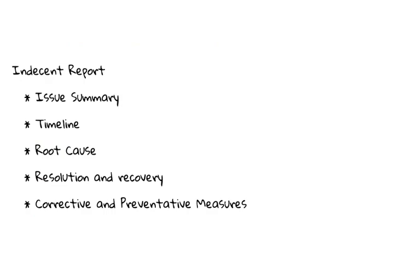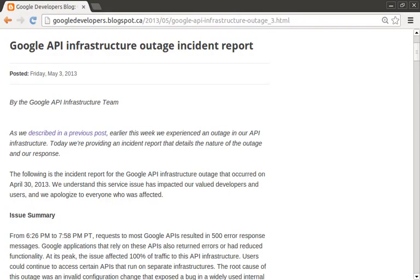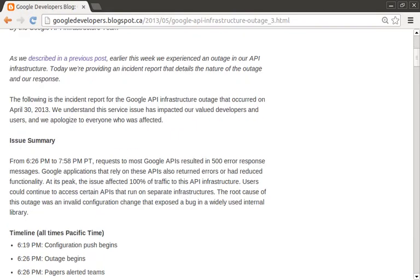The structure is actually surprisingly simple and yet powerful. The report is made up of five parts: an issue summary, a timeline, root cause analysis, resolution and recovery, and lastly, corrective and preventative measures. Let's review each of these parts in detail.